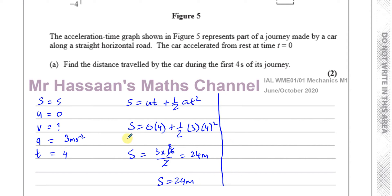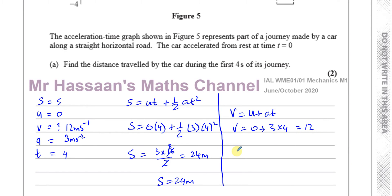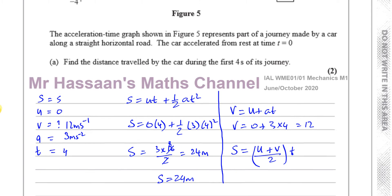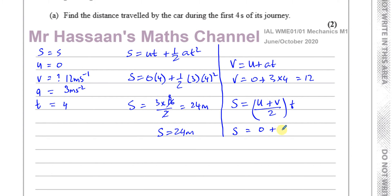Another method: since we know the initial speed, acceleration, and time, we can find v using v equals u plus at, which equals 0 plus 3 times 4, giving v equals 12 metres per second after 4 seconds. Then using s equals (u plus v) over 2 times t, that's (0 plus 12) over 2 times 4, giving s equals 6 times 4, which is 24 metres.